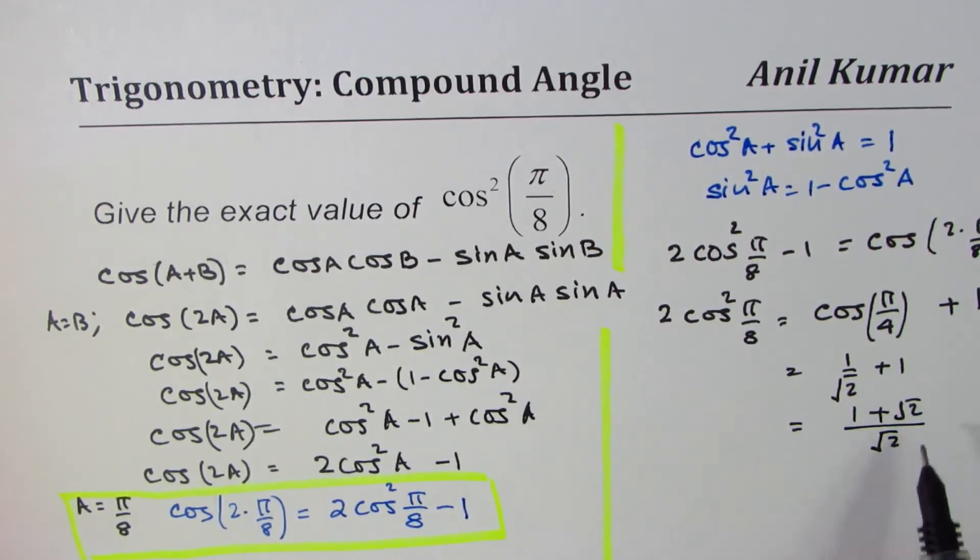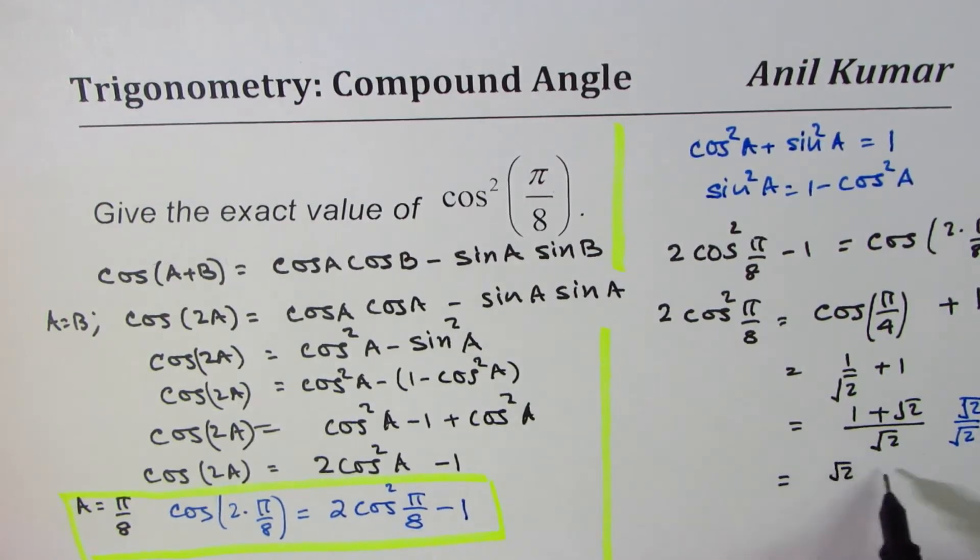Now we need to rationalize this, right? Okay, first let me write this with a common denominator - actually that is not a good way of writing. Normally we rationalize this, that is to say we multiply and divide by √2, so that is called rationalization. Once you do that, we get √2 times 1 as √2, and √2 times √2 which is 2.